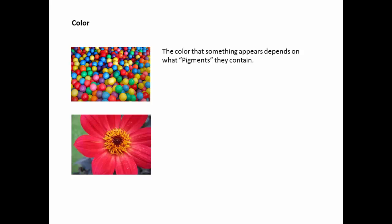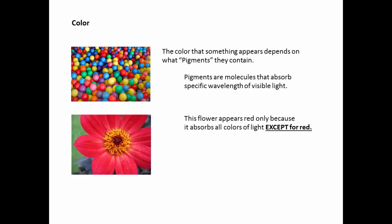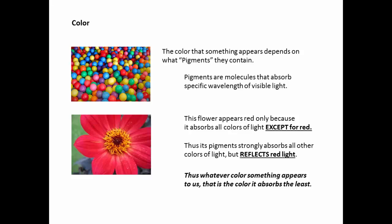If we perceive things in the world as different colors, what does that mean? The color that something appears depends on what pigments they contain. The term pigments are molecules that absorb specific wavelengths of visible light. You can physically change the color of an object by putting different pigments on its surface, like paint. Natural things like this flower appear red only because it absorbs all colors or wavelengths of light except for red. Thus, its pigments strongly absorb all the other colors of light and it reflects the red light back at us.